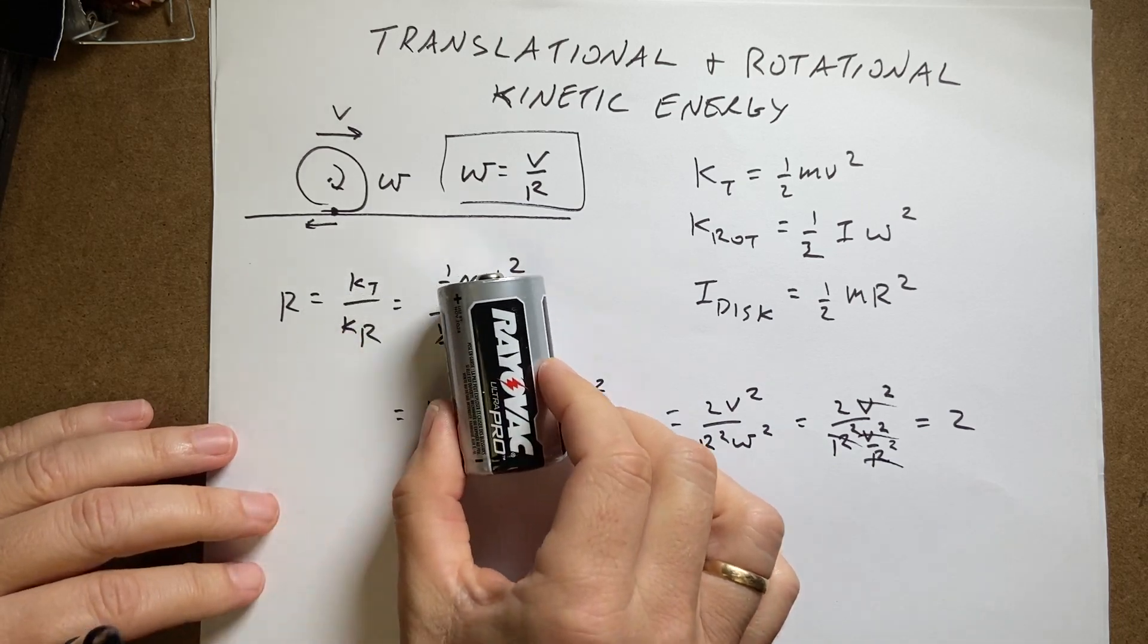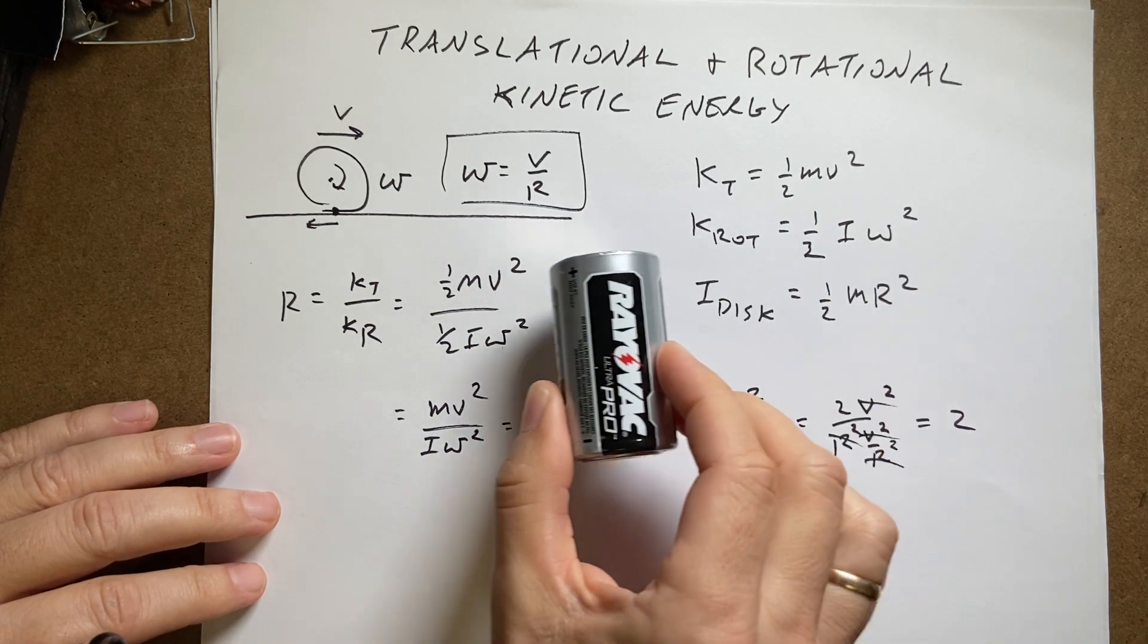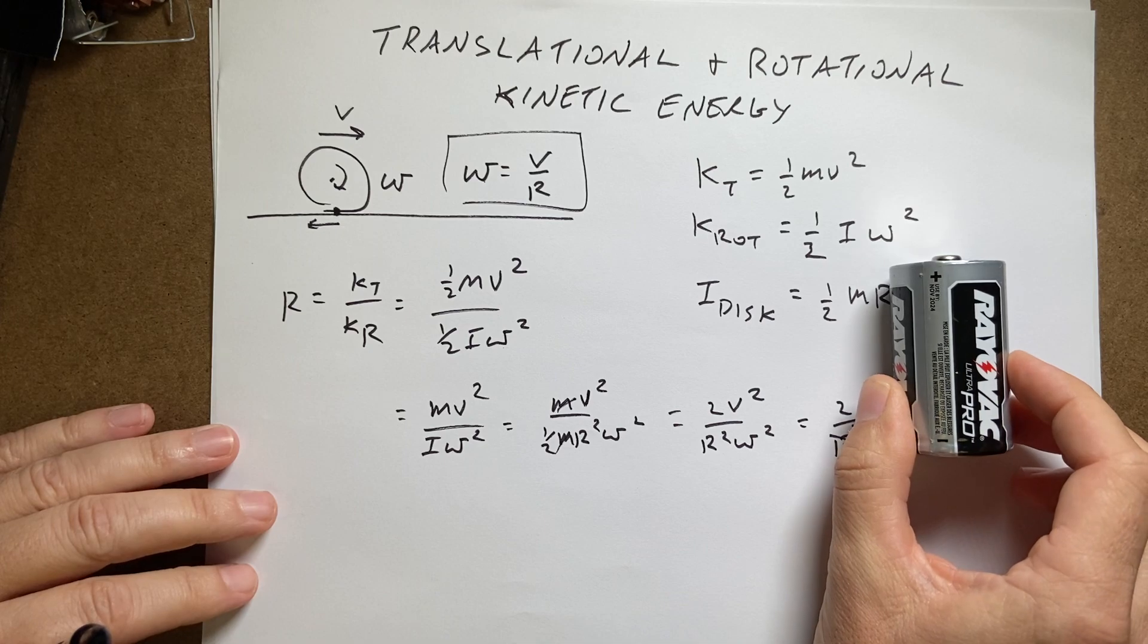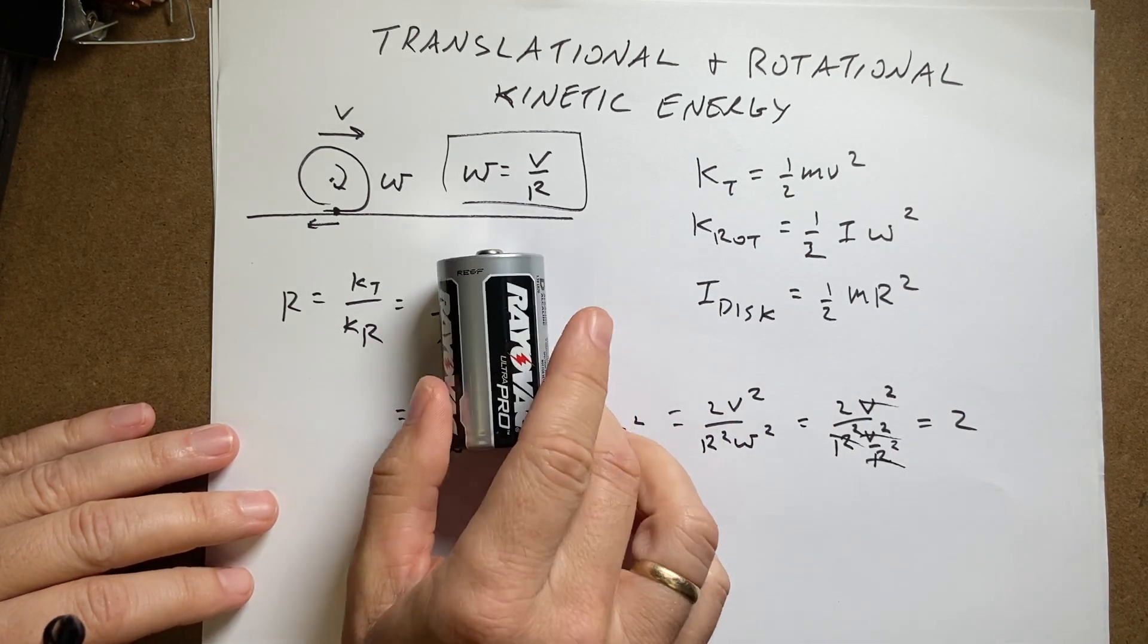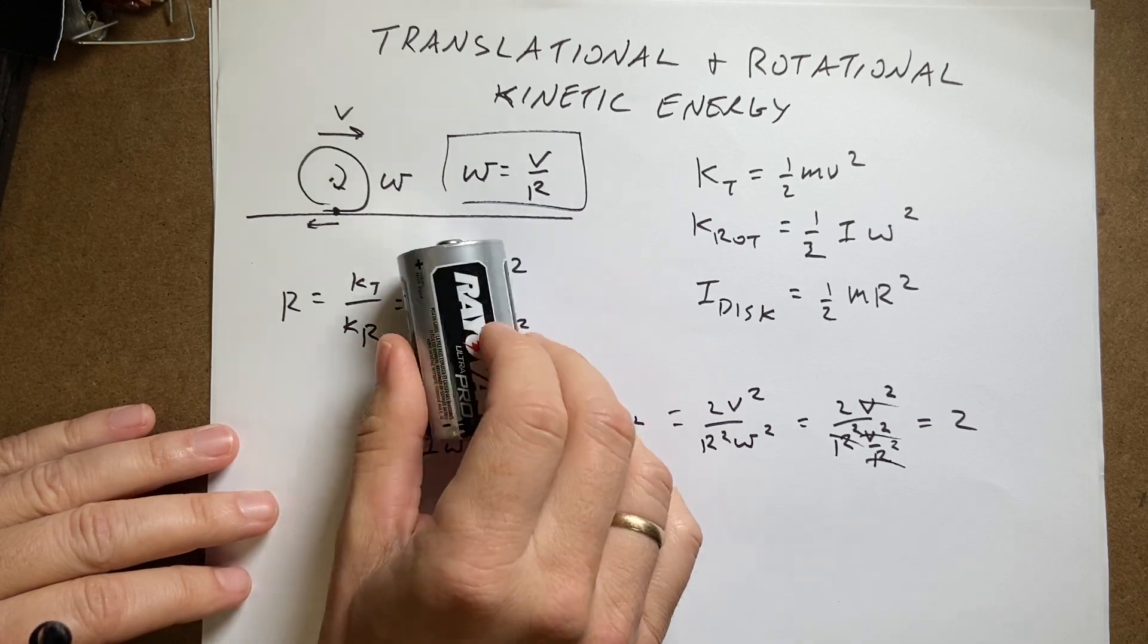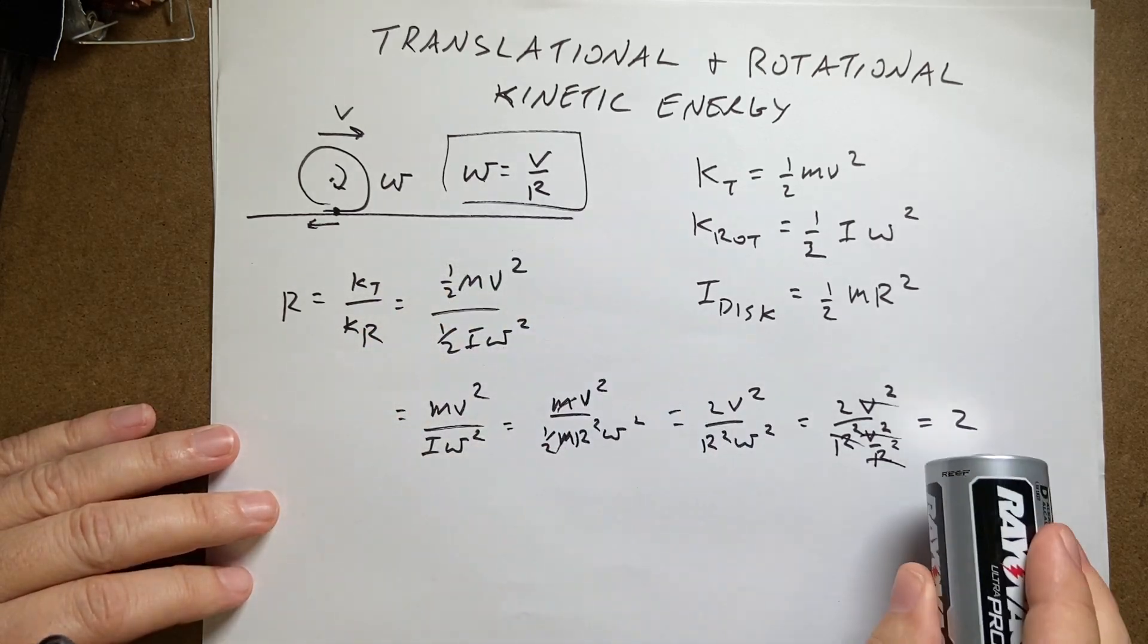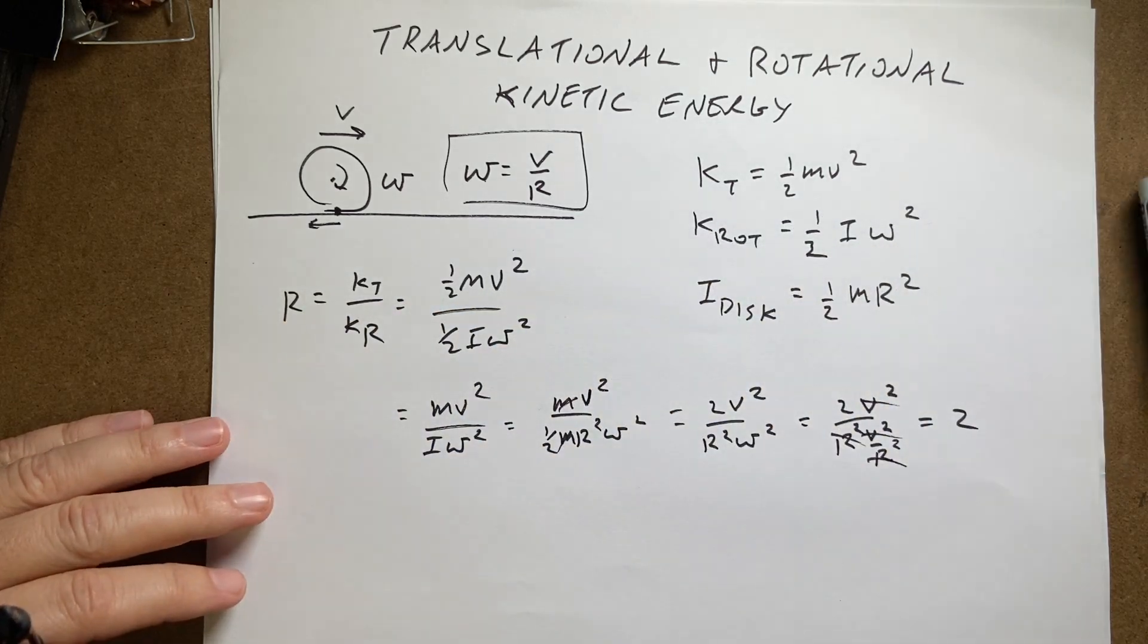Of course, I could move it this way without, just sliding it along the table. Now there is no rotational kinetic energy. Okay. Also, I could do this. I could spin it without moving. Now there is no translational kinetic energy. So this is only true in the case of rolling without slipping.